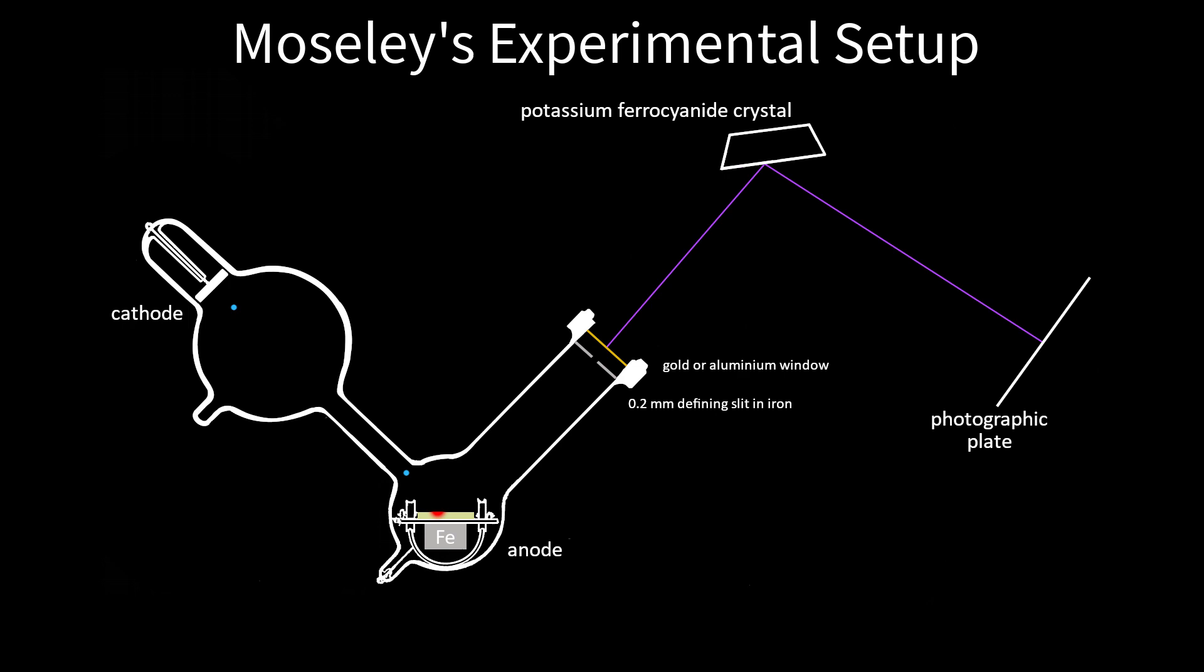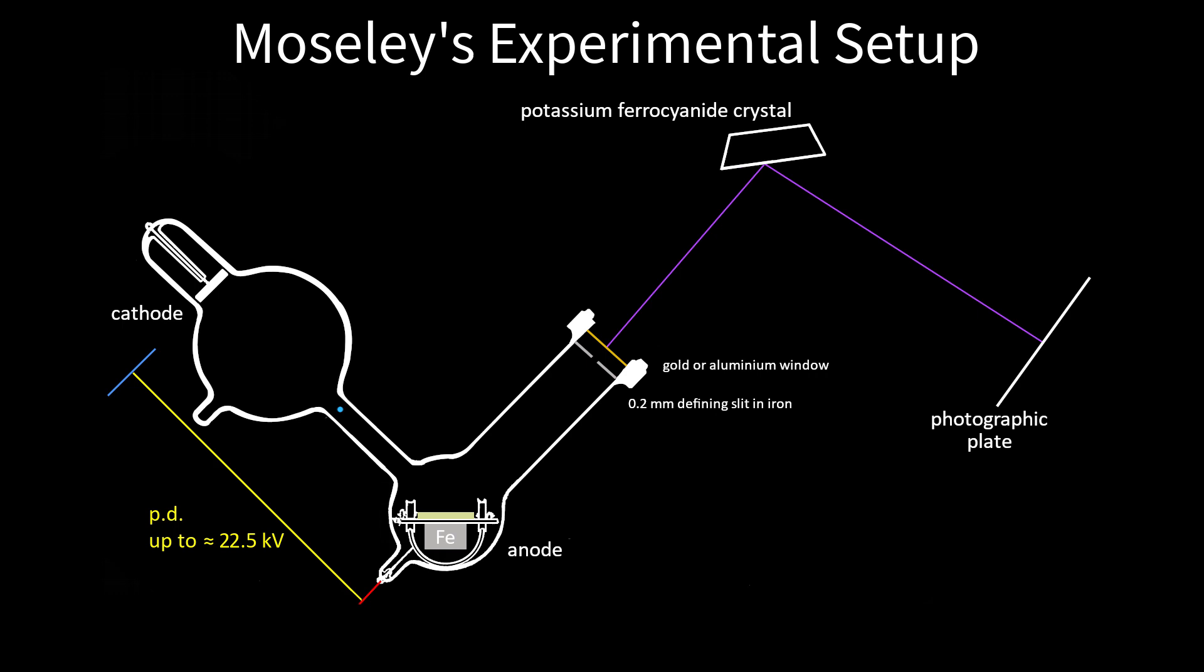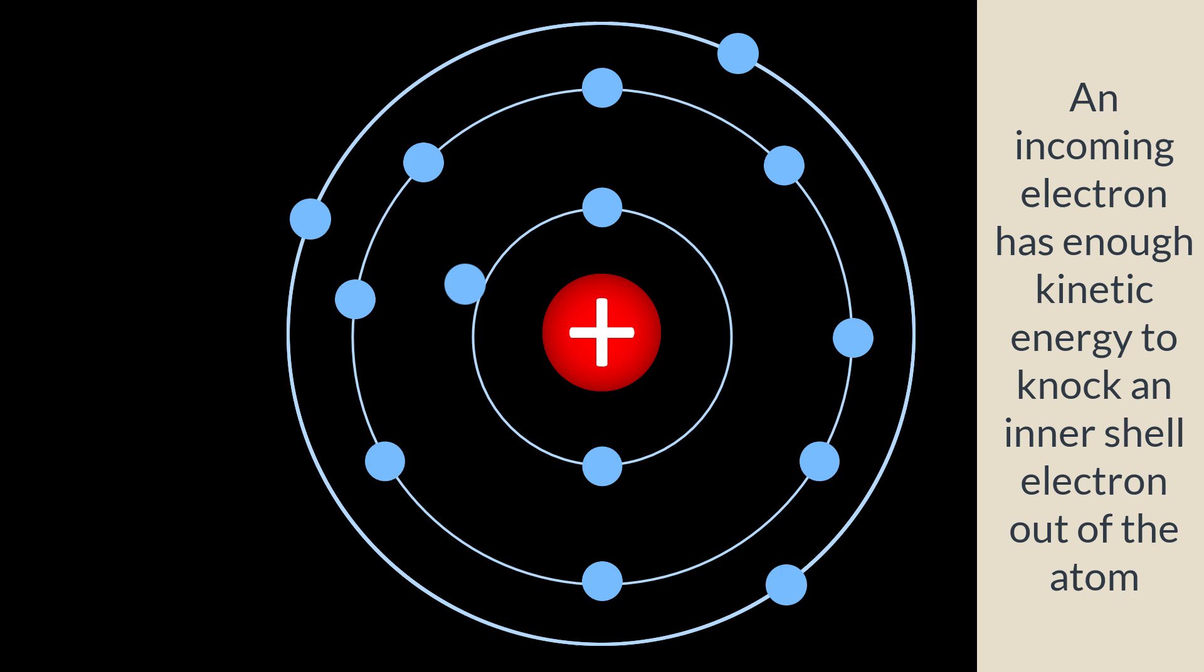Electron arrivals generated X-rays in two ways. One produced a continuous spectrum, which Moseley wasn't interested in. What really interested him was that when the potential difference between cathode and anode is high enough, the cathode ray electrons pick up enough kinetic energy to eject tightly bound inner-shell electrons from atoms. An electron from an outer shell immediately fills the vacancy.